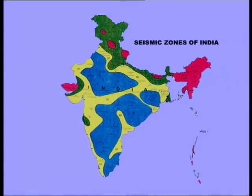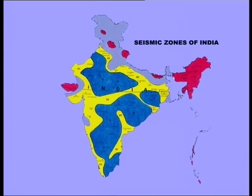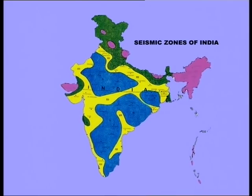Earthquakes of magnitude between 4 and 4.6 fall in Zone 2. Zone 3 is the moderate damage risk zone, with earthquakes of magnitude 4.7 to 5.3. Zone 4 is the high damage risk zone, covering the extra-peninsular part of India, part of Gujarat and the Koyna region of Maharashtra, with earthquakes of magnitude between 5.4 and 6. Zone 5 is the very high damage risk zone, covering parts of the Himalayas, northeastern India and portions of Gujarat — one of the seismically most prone areas in the world — with earthquakes of magnitude more than 6.